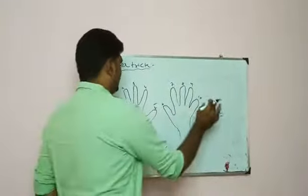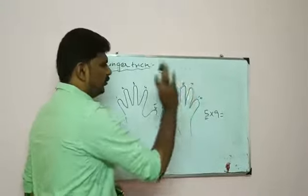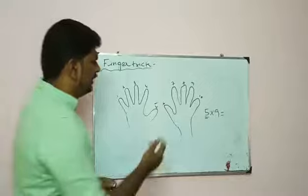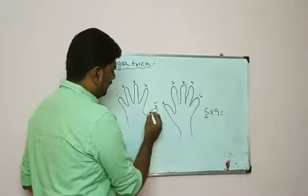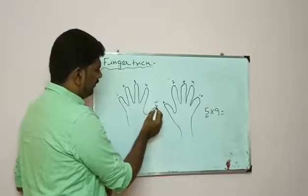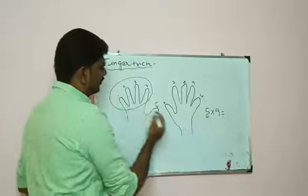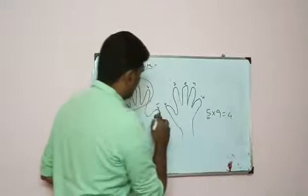Now 5 into 9. Count to the 5th finger. There is a 5th finger. These fingers before it, these are 4 fingers. So 4.